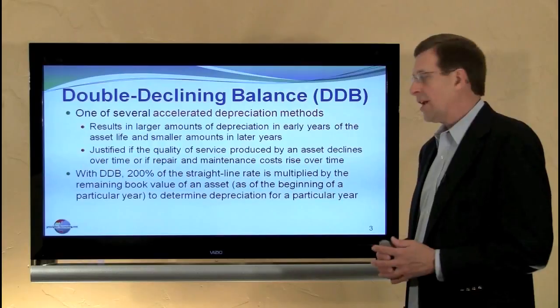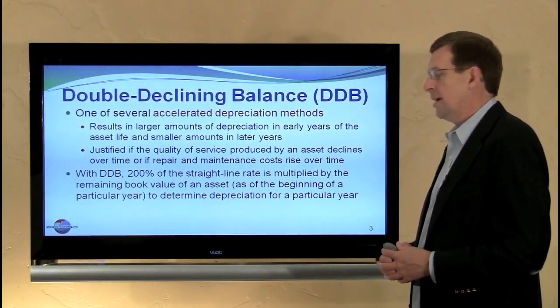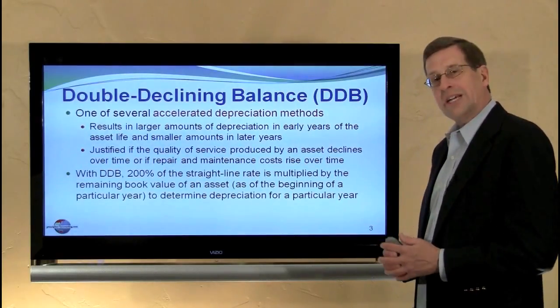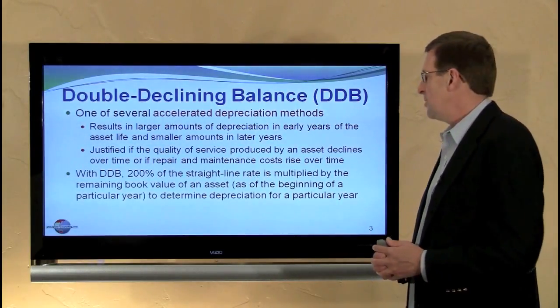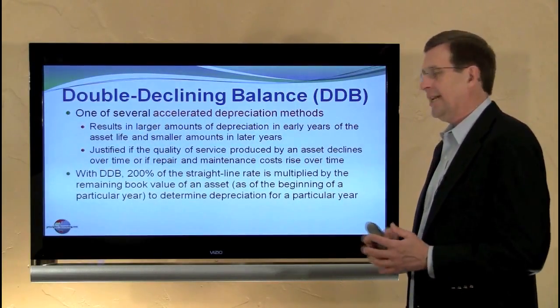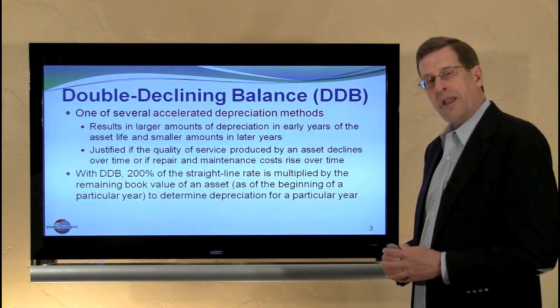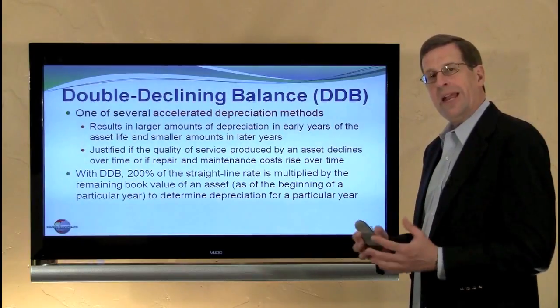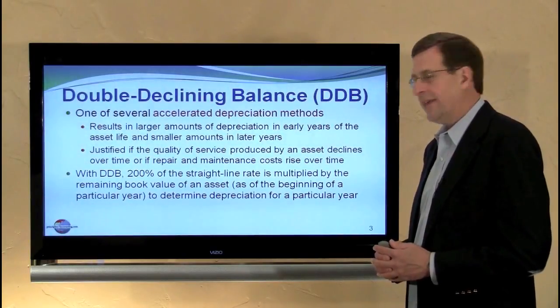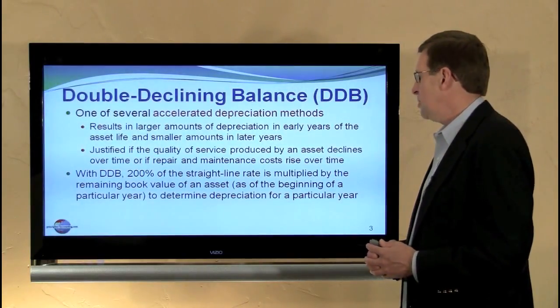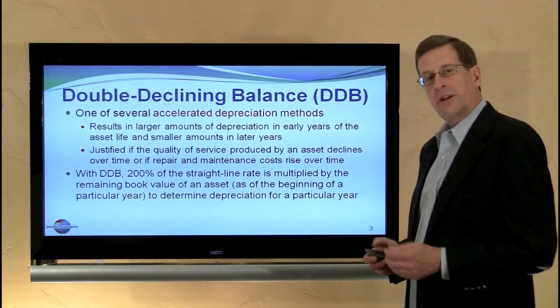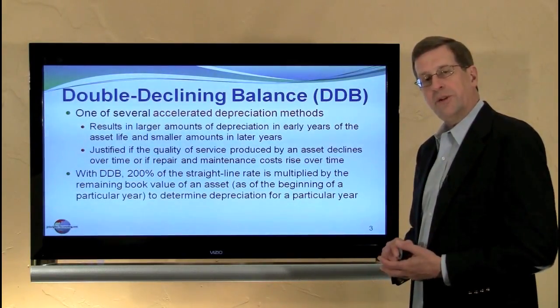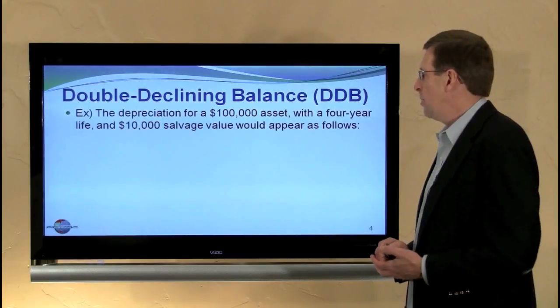With double declining balance, we're going to take 200% of the straight-line rate and multiply that times the remaining book value of the asset at the end of each period to determine depreciation for that particular period.